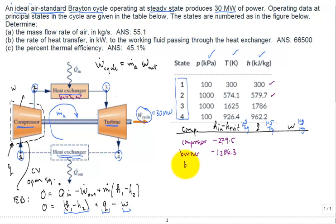And then for the turbine, the H3 minus the H4 is a positive 823.8. And then for that other heat exchanger that's rejecting heat, it's the 662.0.